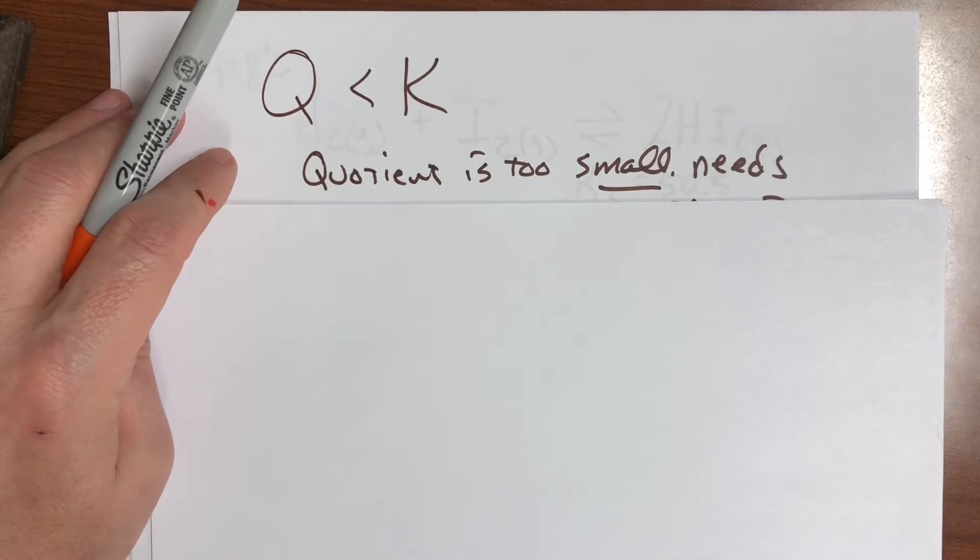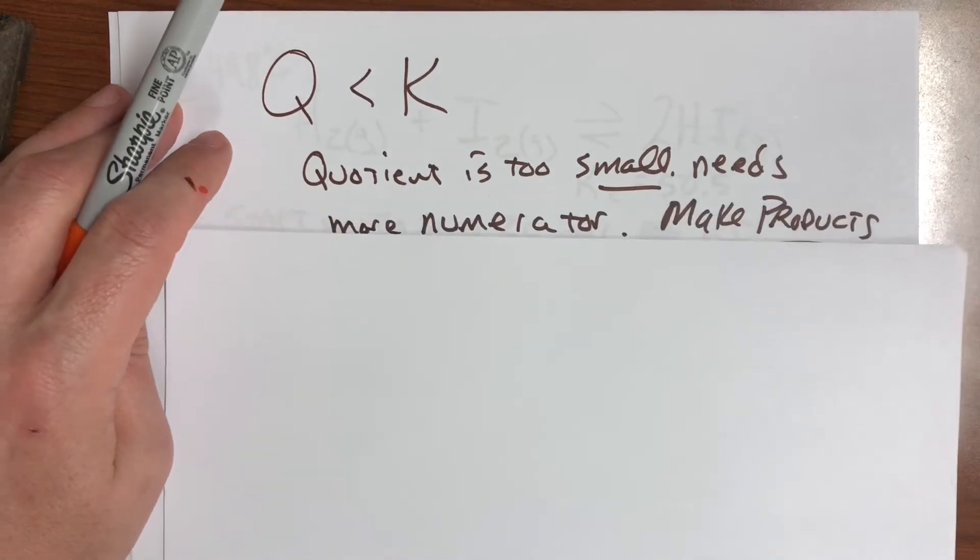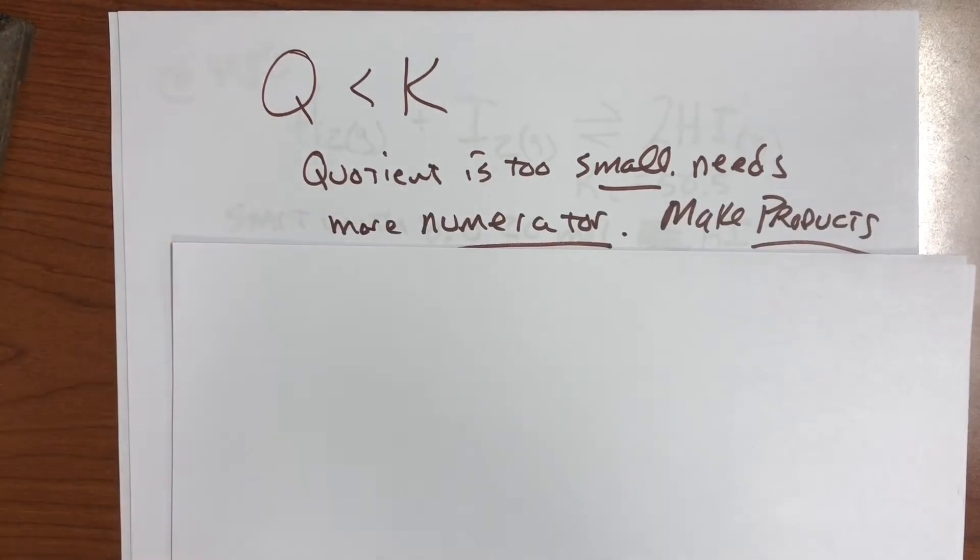Where is the numerator? Is that products or reactants? It's products. So if you have a Q that ends up smaller than K, then boom, you know you need to make some more products.